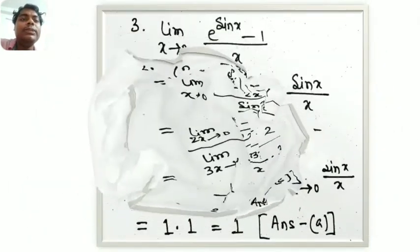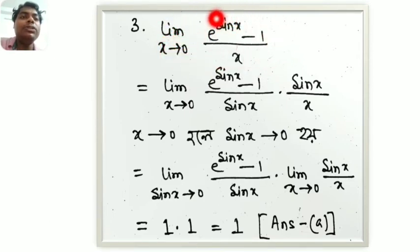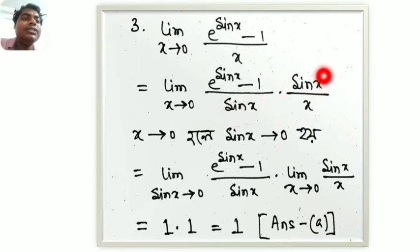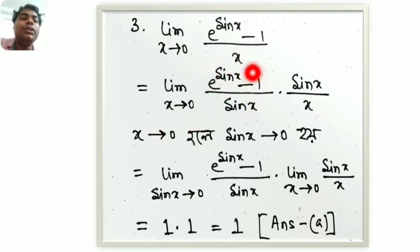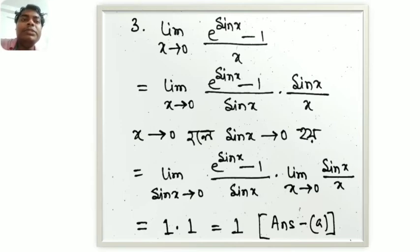Next, we look at question 3: limit x tends to 0 of (e^(sin x) minus 1) by x. We know that when x tends to 0, sin x tends to 0. So we substitute: limit sin x tends to 0 of (e^(sin x) minus 1) by sin x, multiplied by limit x tends to 0 of sin x by x. Both values equal 1, so the answer is 1 into 1 equals 1.